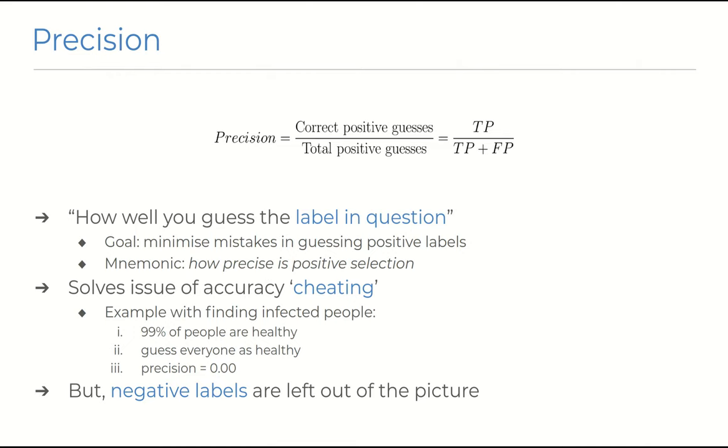And looking back at the example where a system would just guess negative for everything, we'll see that the precision score penalizes the model with the score of zero because it has failed to guess any positive labels whatsoever.